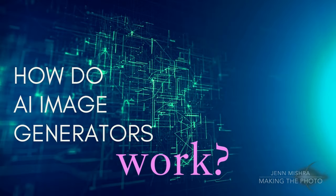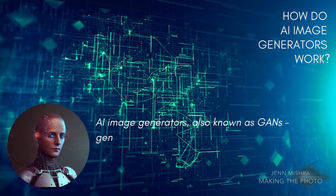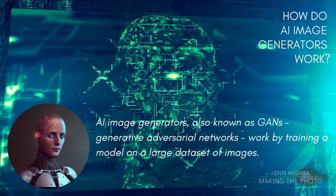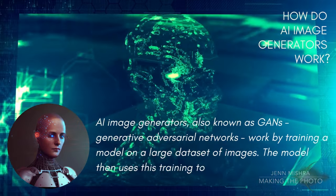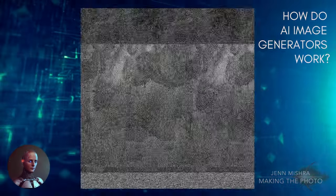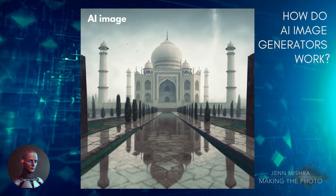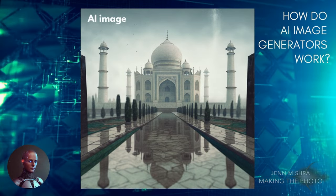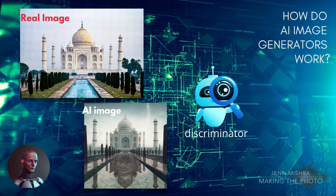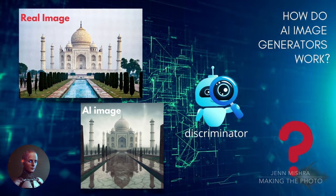How do AI image generators work? AI image generators, also known as GANs — generative adversarial networks — work by training a model on a large dataset of images. The model then uses this training to generate new images that are similar to the ones it was trained on. This is done by feeding random noise into the model and using it to generate images based on patterns and features learned from the training data. The resulting images are typically highly realistic and can be used for purposes such as machine learning research or generating images for artistic purposes.